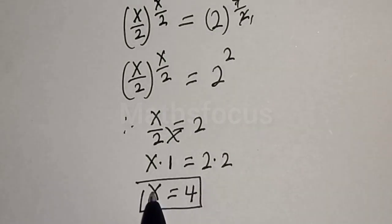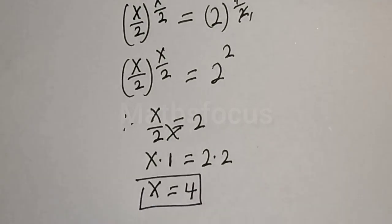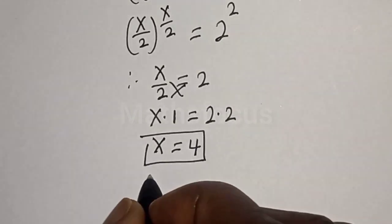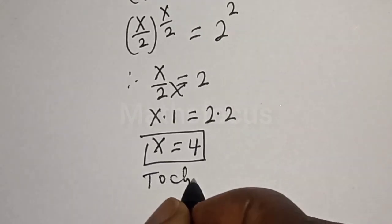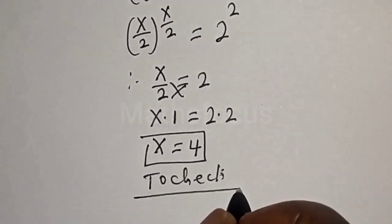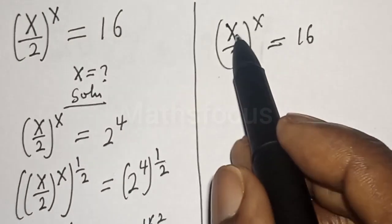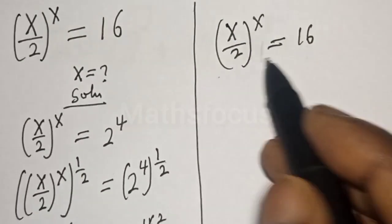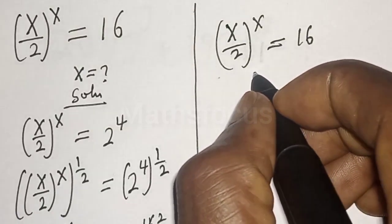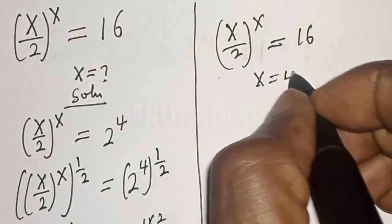We can check to confirm if our answer is right or wrong. To check, we have the given equation S over 2 to the power of S must be equal to 16. At S is equal to what? 4. Let's see.